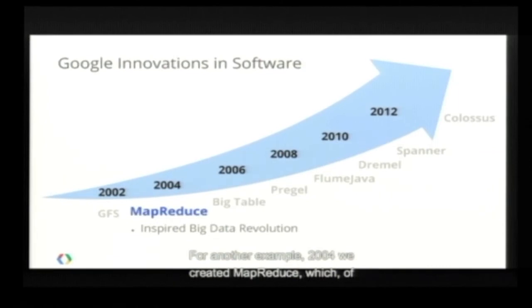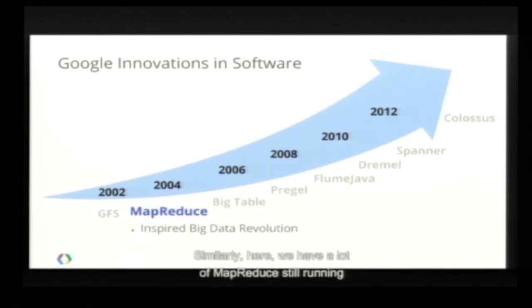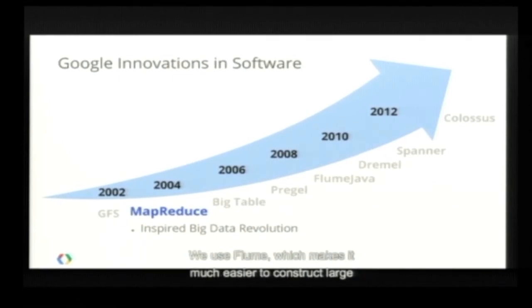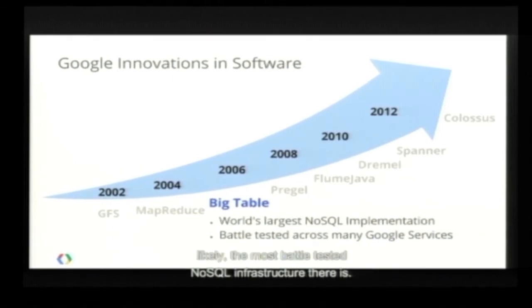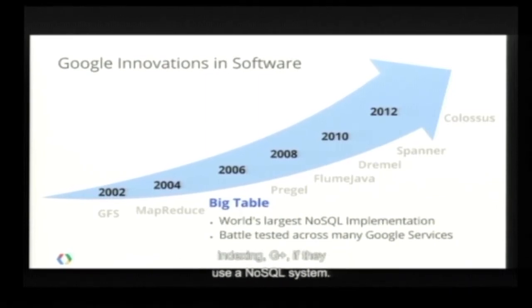Another example: in 2004 we created MapReduce, which inspired Hadoop and the whole big data industry. We still have a lot of MapReduce running inside the company, but we now use Flume, which makes it much easier to construct large pipelines of MapReduces. In 2006, we created Bigtable — probably the world's most scalable and most battle-tested NoSQL infrastructure. Almost everything at Google uses Bigtable: Gmail, web indexing, Google+. Pretty much everything runs on Bigtable today.